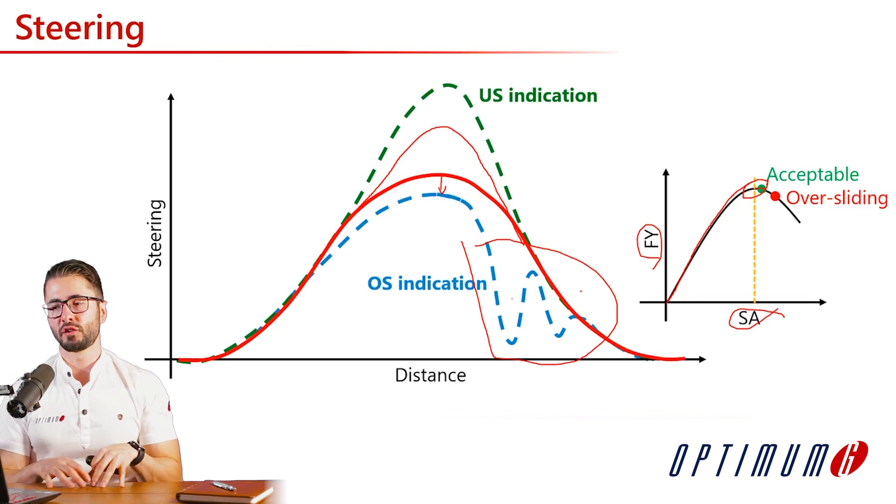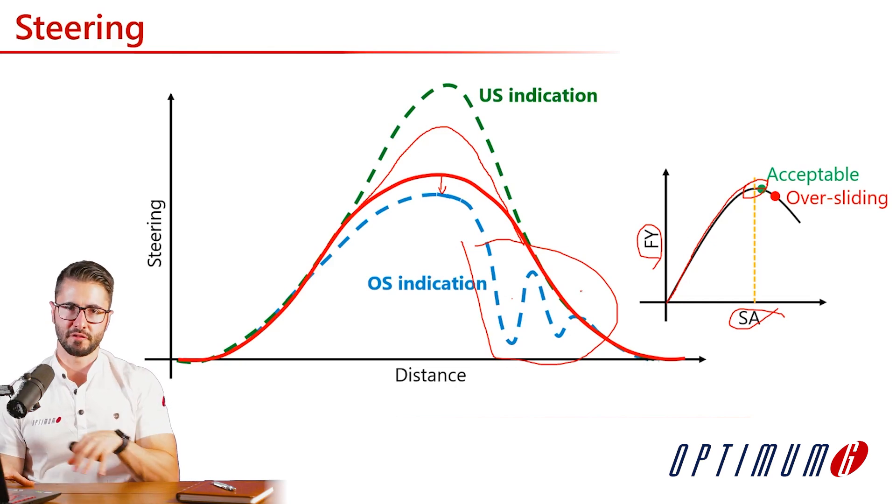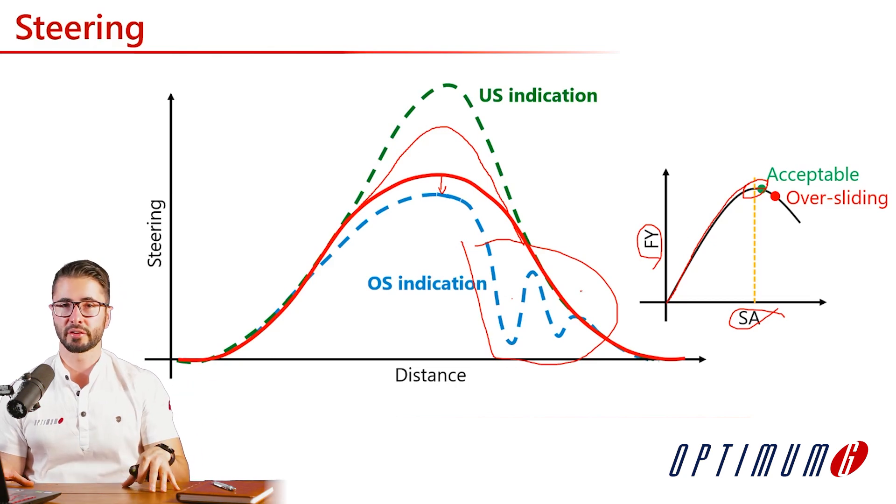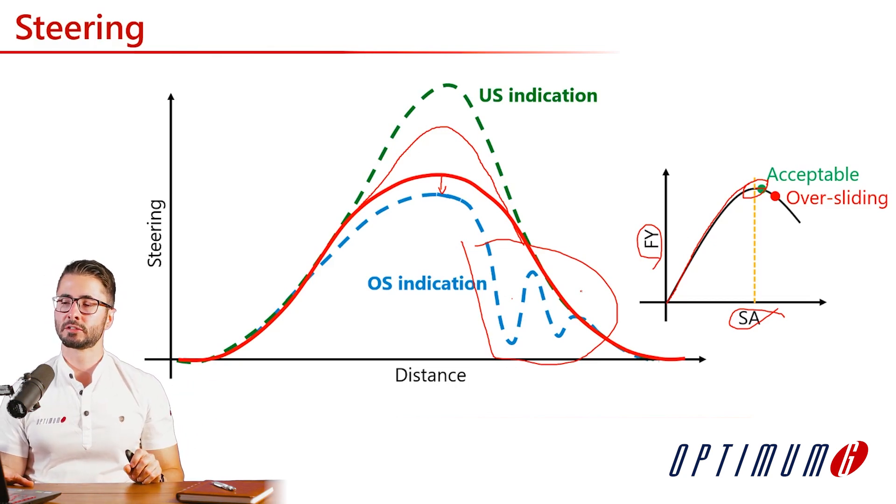We can use this information to connect with driver feedback and all other logged data or even tire information. Over-sliding can also happen on the rears — if the driver is applying too many corrections and sliding the rear more than needed, this increases wear and makes the car even more oversteer.